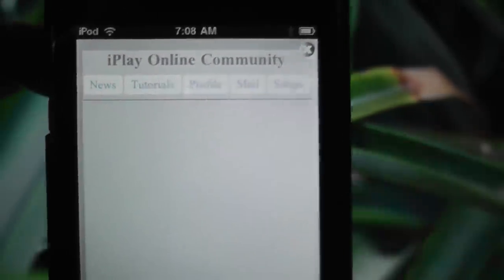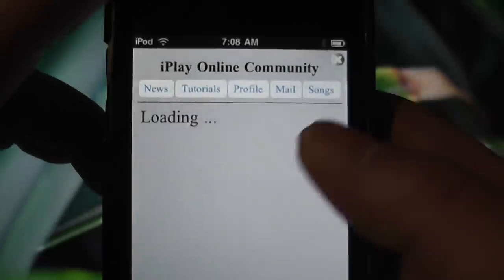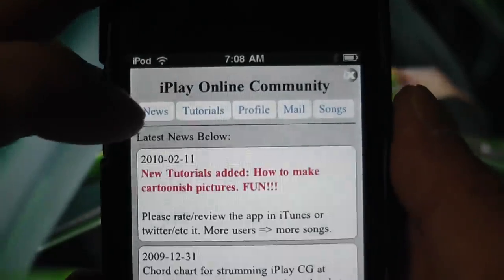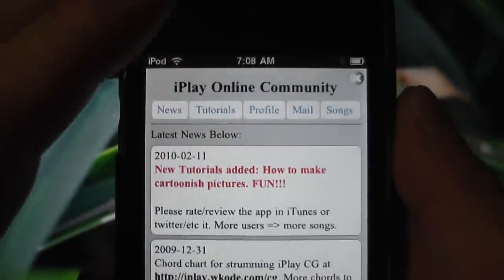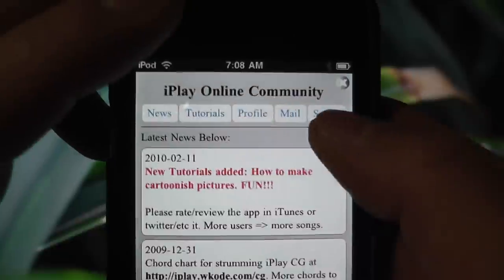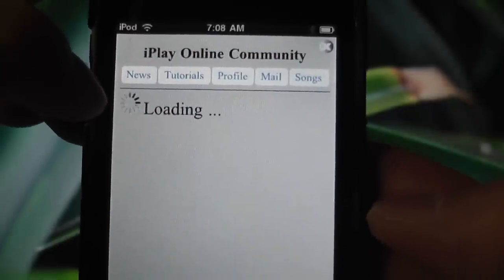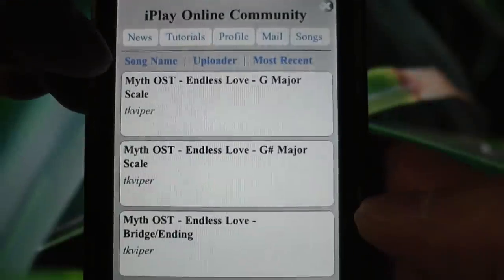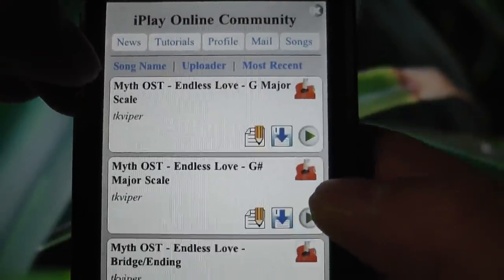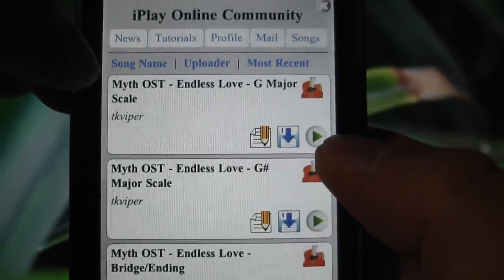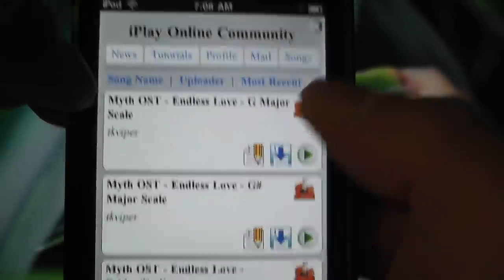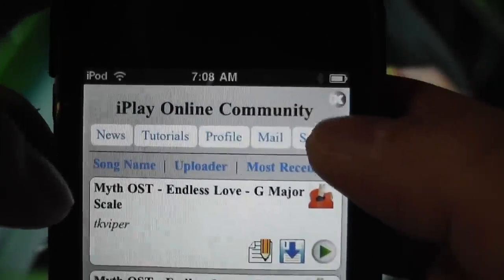Tap on the songs tab. There's a lot of stuff here: the tutorials, news, profile, your mailbox. You can message other users on this website. So if you go to songs, you get a list of all the songs available. You can play them first. If you like it, download it. That's a play button. You can download it. Once you've downloaded, you exit by tapping this new X here.